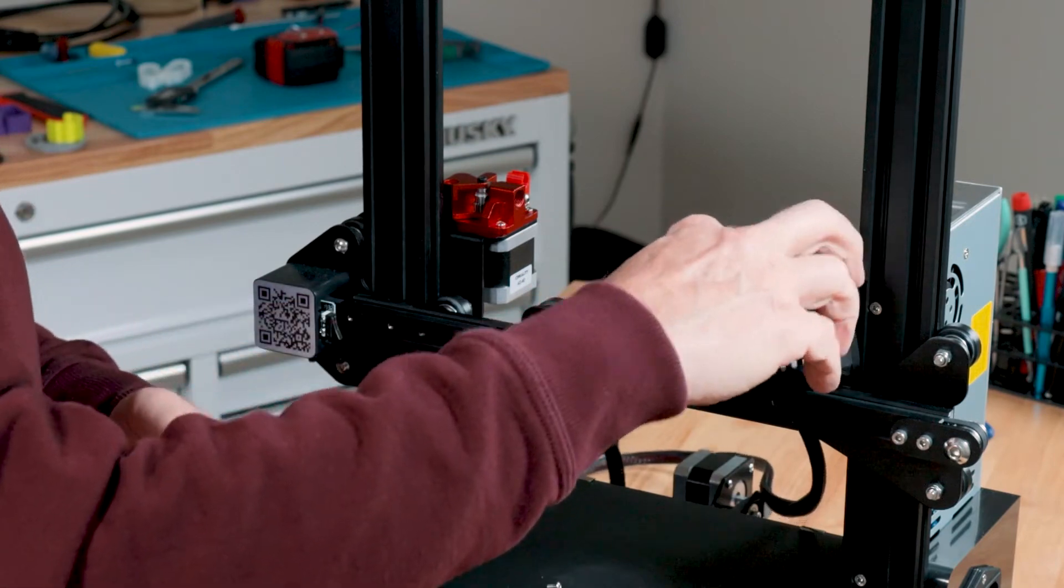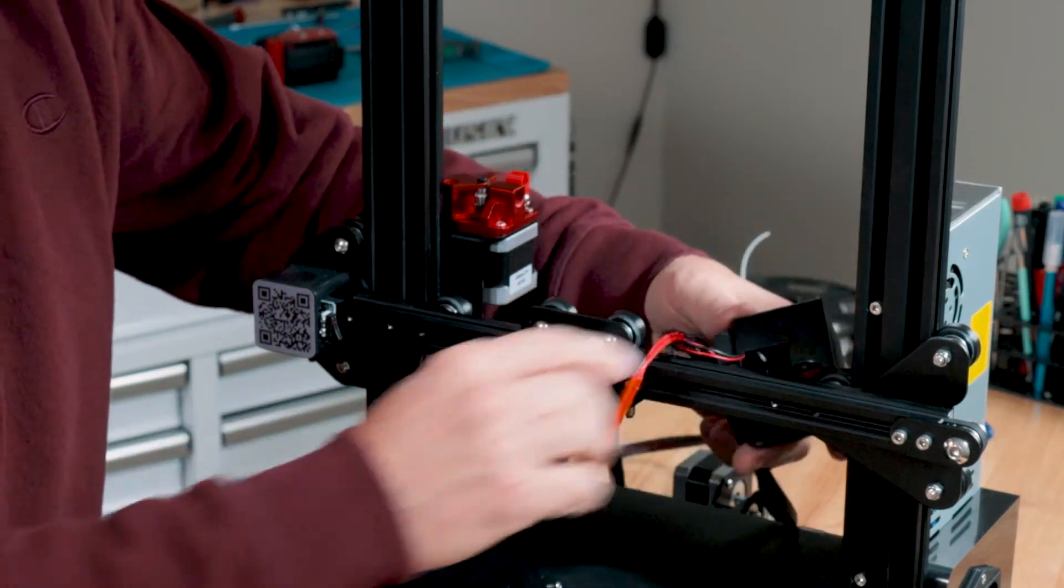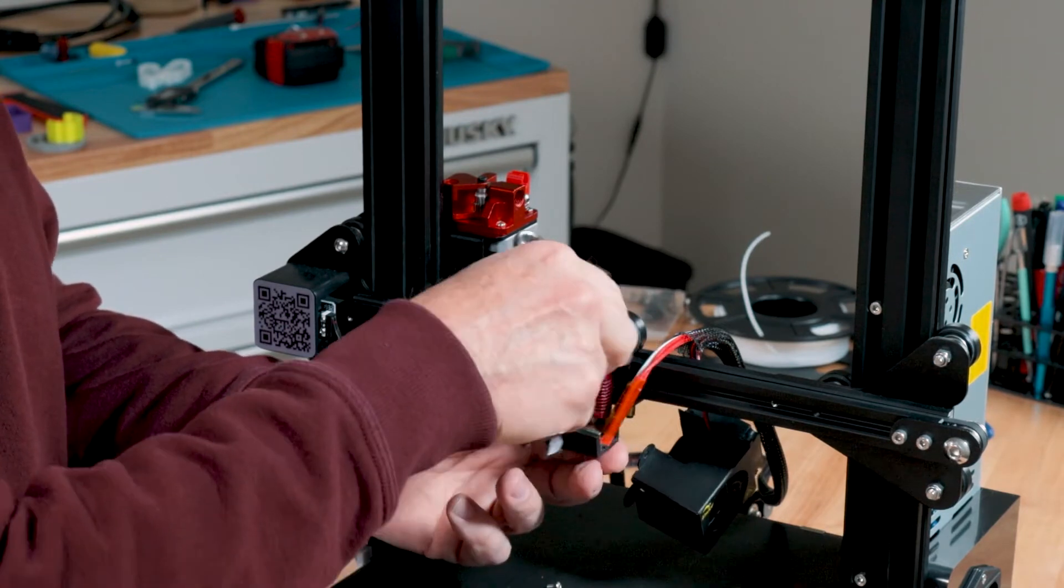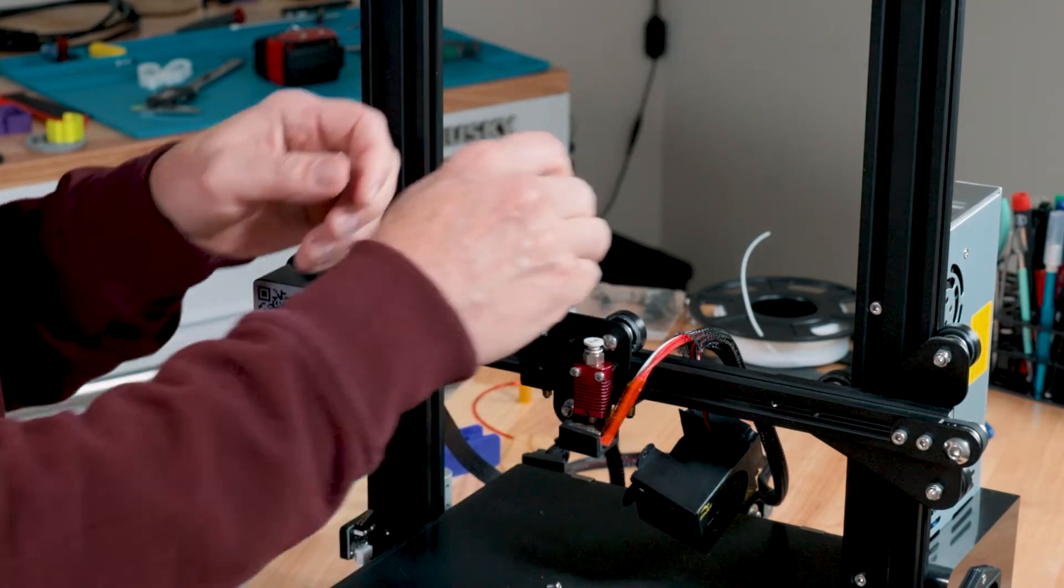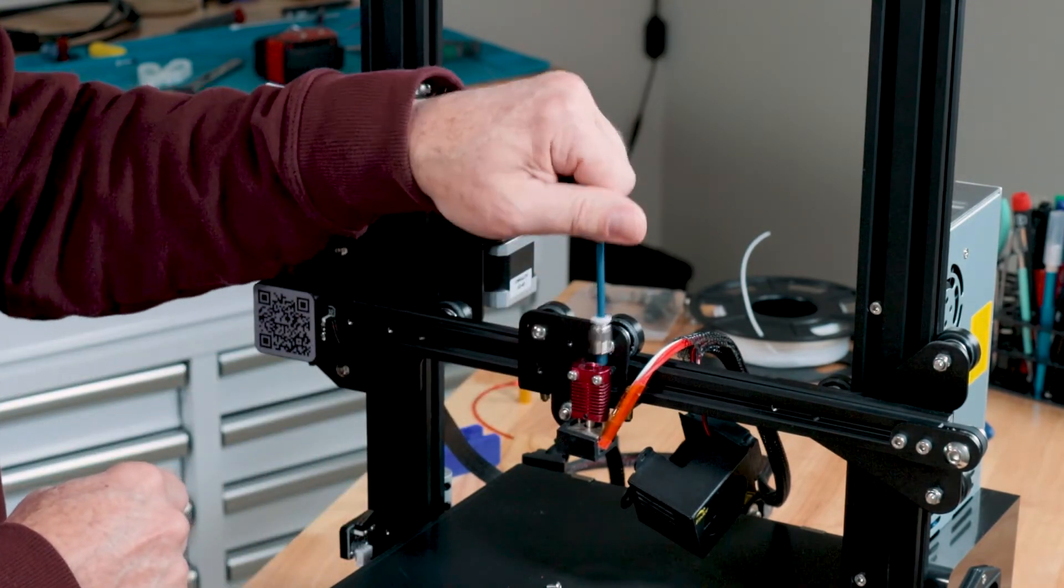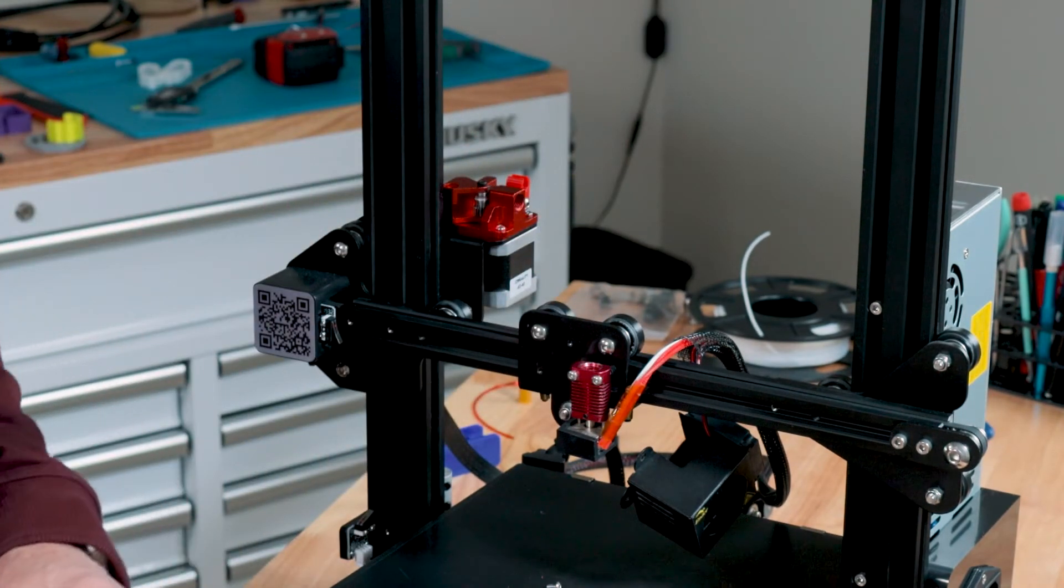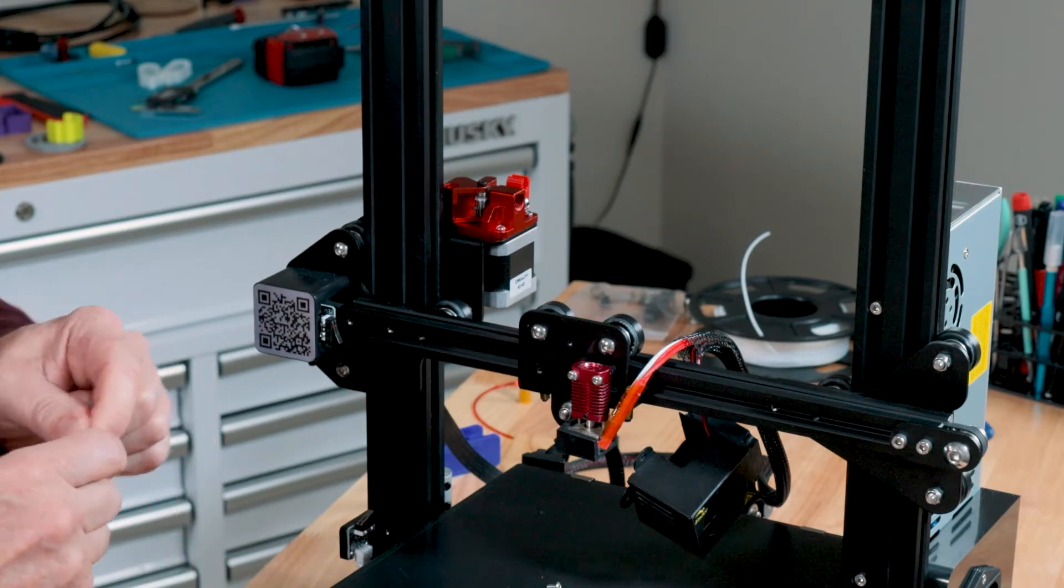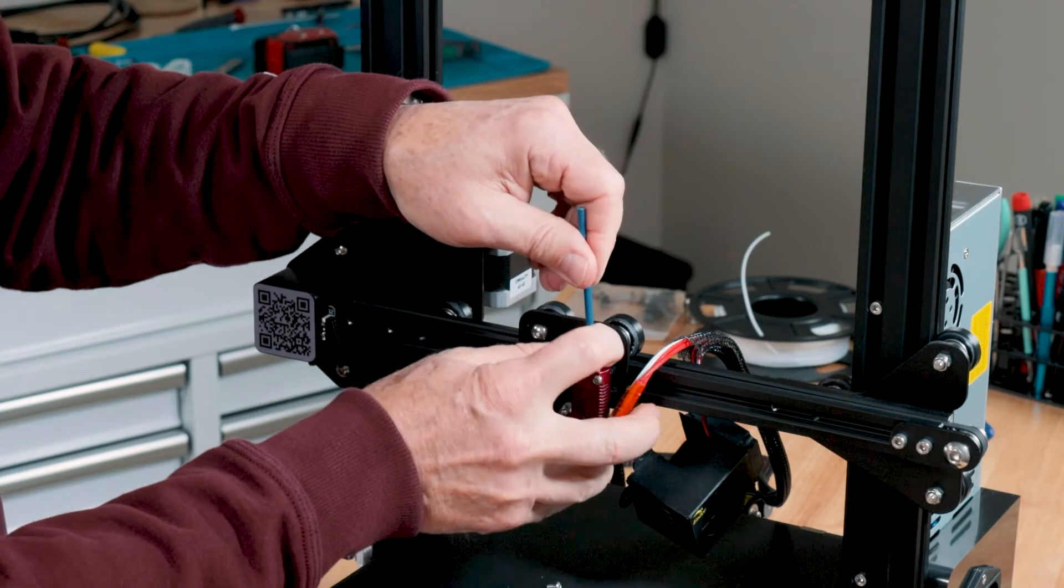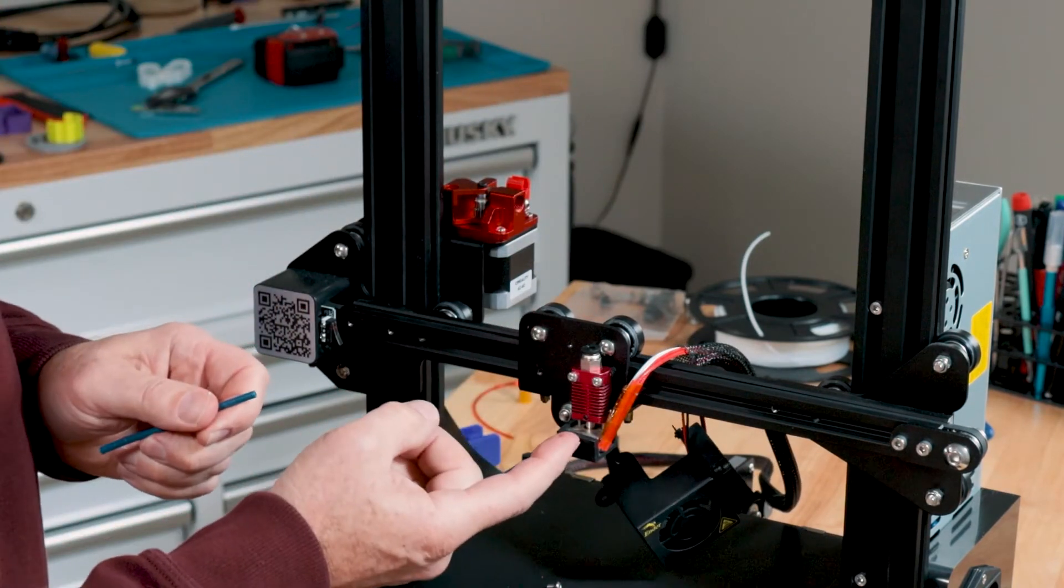Now while we have this off I want to replace the stock fitting with one of the pneumatic fittings. This one I had already pre-loosened up. The way I like to take this out is take a piece of old Bowden tube and now you can wind it out. You can do the same thing to put the new pneumatic fitting in and it makes it easier to thread it in. I leave this loose until I have my nozzle fully installed.